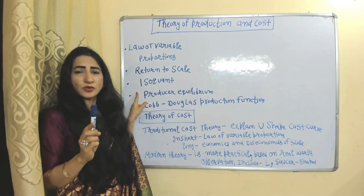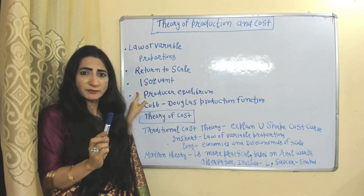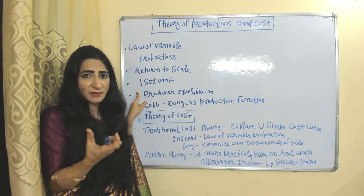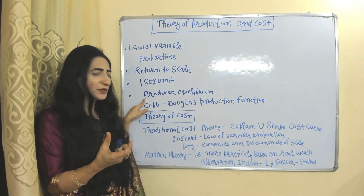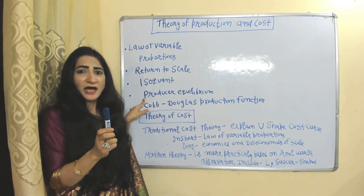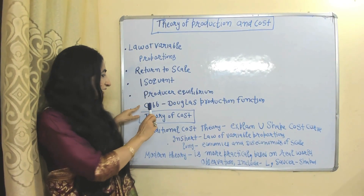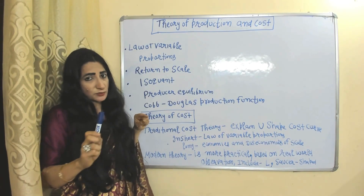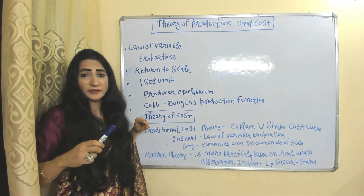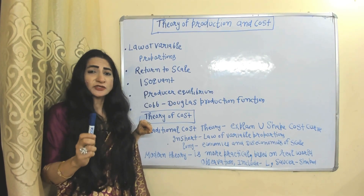An isoquant is a curve showing combinations of two inputs — like labor and capital — which give the same amount of output. Producer equilibrium is achieved where the isoquant is tangent to the isocost line. The Cobb-Douglas production function is a very important production function based on an empirical study of the American manufacturing industry, showing the technical relationship between inputs and output. It is a linear homogeneous production function.